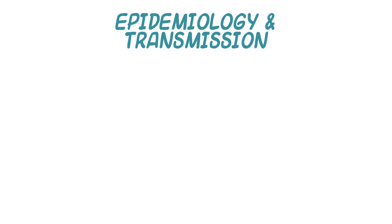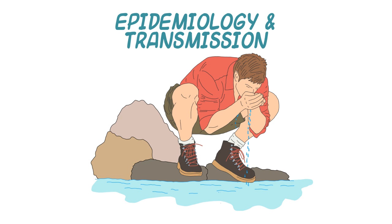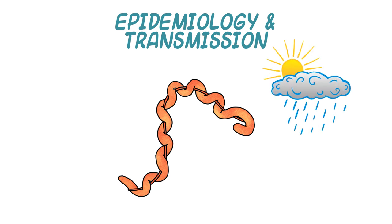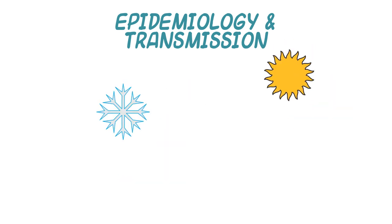Transmission among maintenance hosts occurs through contact with infected urine, placental fluids, or milk, and occasionally venereally or transplacentally. Infection of incidental hosts occurs by indirect contact, most often through water contaminated with urine of maintenance hosts. Survival of the leptospires in the environment to allow transmission is favored by moist and warm conditions, as lepto is killed by freezing, dehydration, and exposure to sunlight.